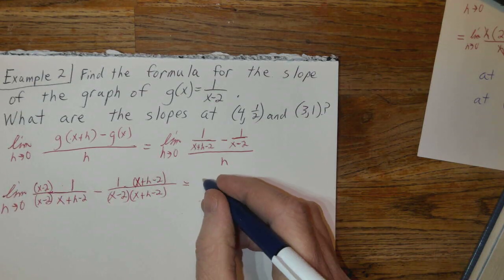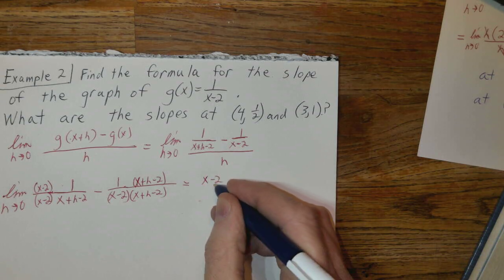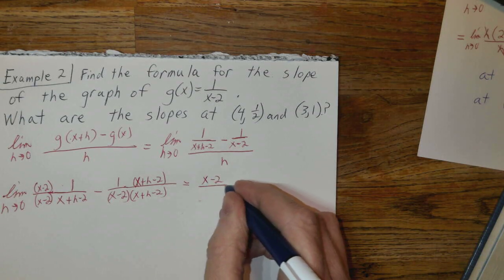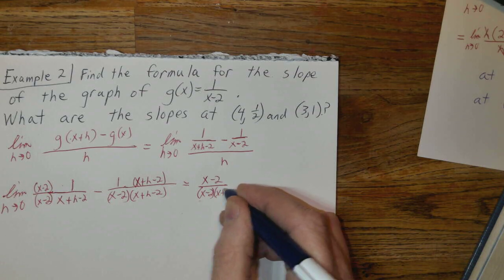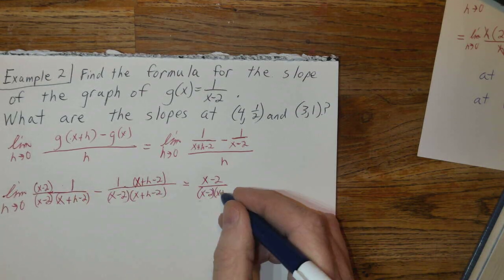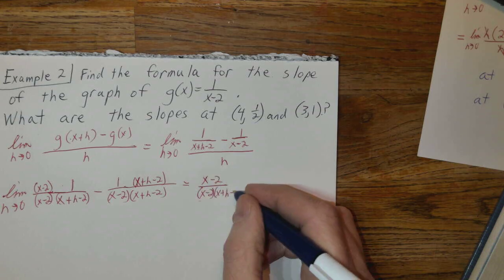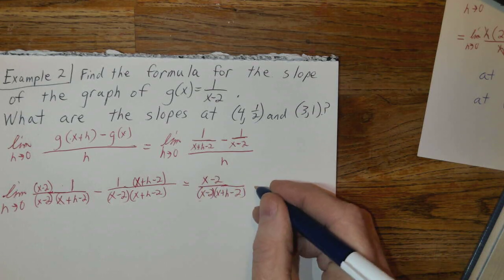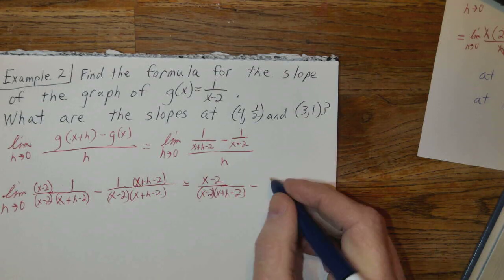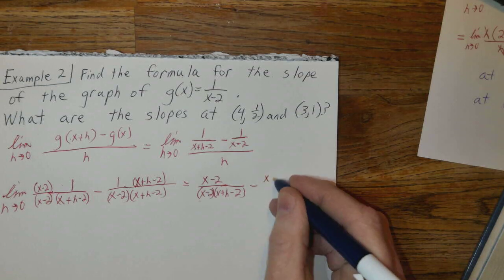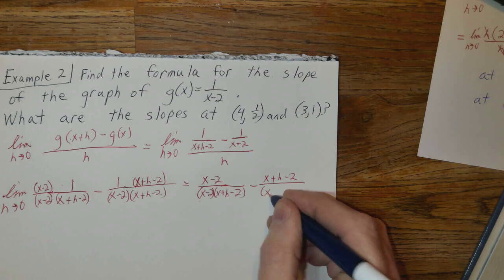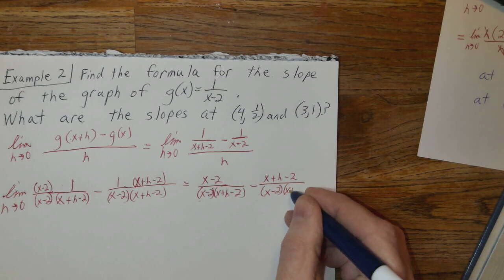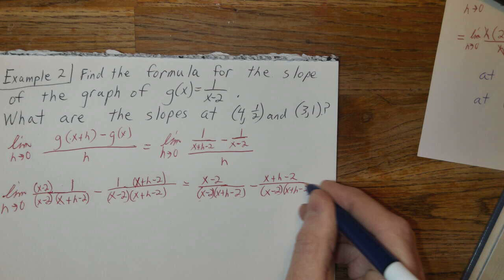And my numerator, I've got (x-2) times 1 there over (x-2) times (x+h-2) minus, and then that's 1, so that's just (x+h-2) over (x-2)(x+h-2).